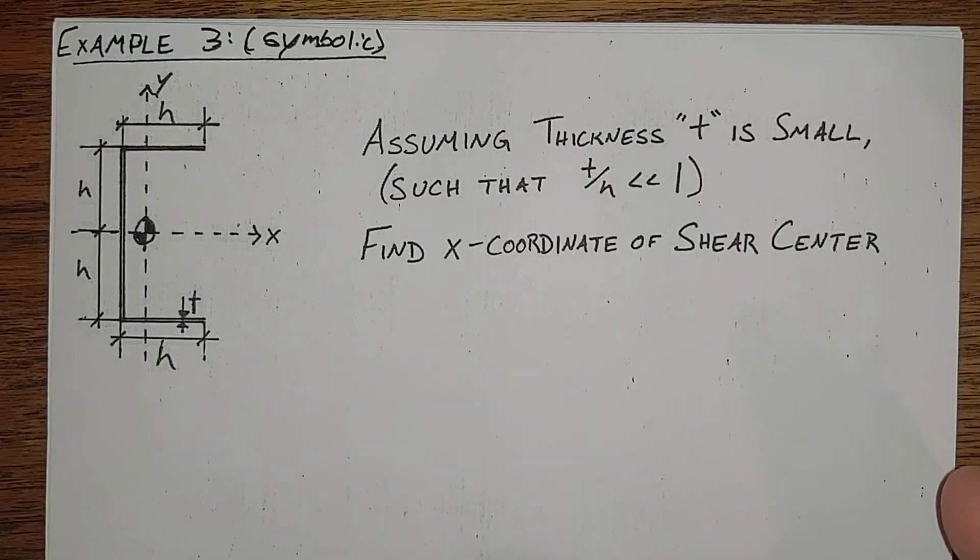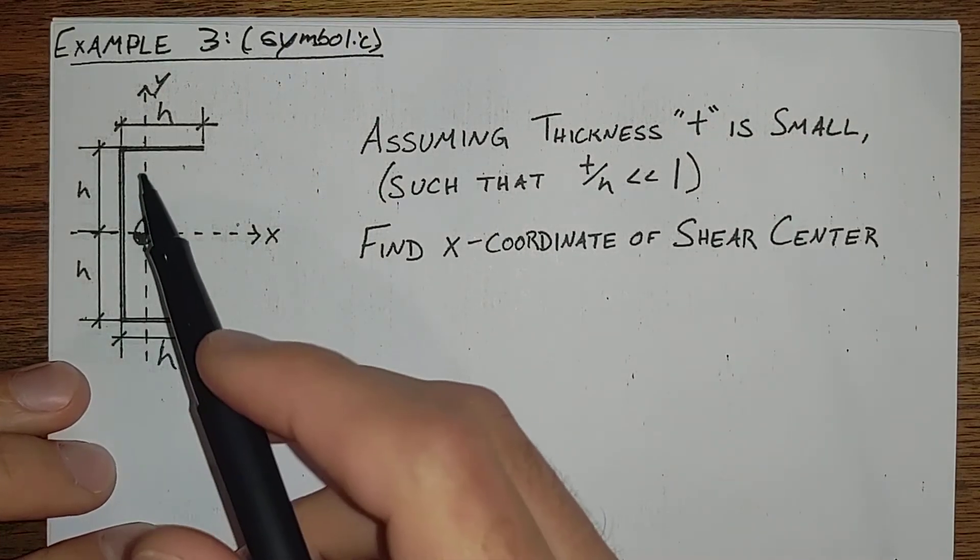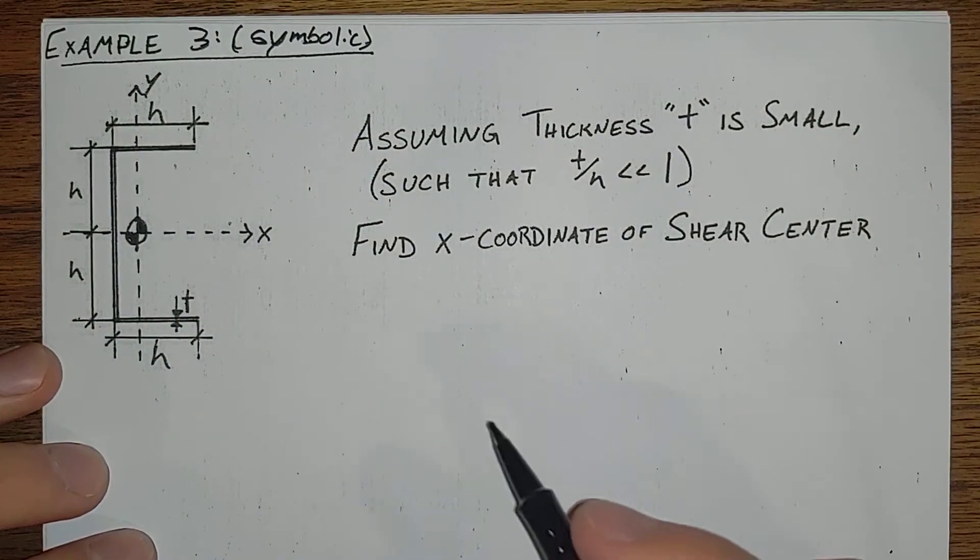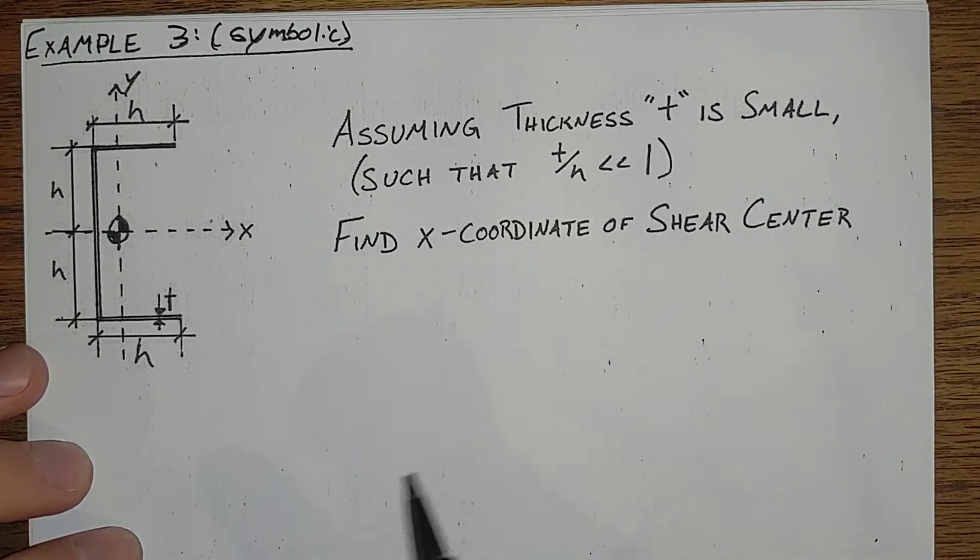In example two, we saw that the math gets very tricky very quickly with any sort of quadratic distribution having q's that blow up out of control.